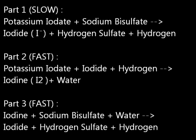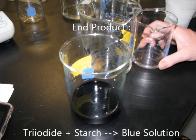The iodate then reacts with the iodide and hydrogen to form iodine and water. The iodine then uses up the remaining sodium sulfate to form iodide again. The iodide combines with the remaining iodine to form a triiodide, which combines with the starch to form a blue compound.